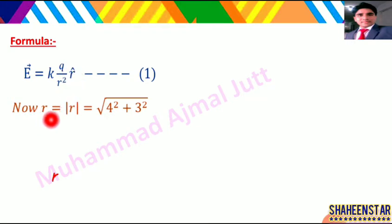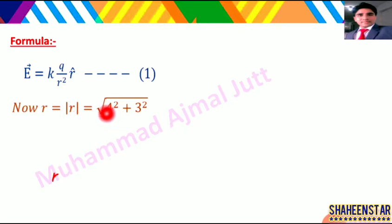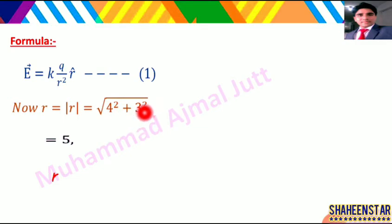R ki magnitude nikalte hain. Agar aapko equation doosri form mein given hai to r ki magnitude nikalne ka formula hai: |r| = √(x² + y²). To x ki value 4 aur y ki value 3 hai: √(4² + 3²) = √(16 + 9) = √25 = 5. To r ki magnitude 5 meter aayi.